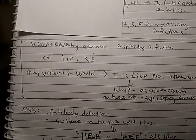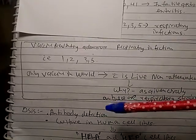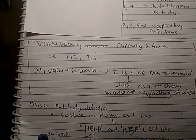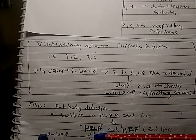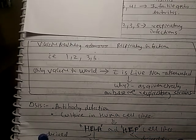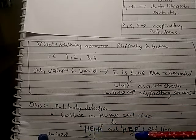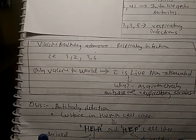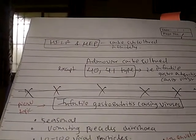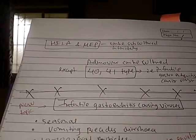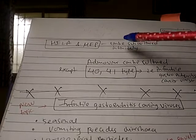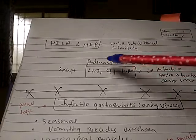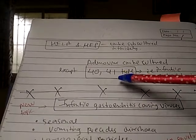Diagnosis of adenovirus involves antibody detection and culture in human cell lines — HeLa and HEP. HEP cell lines are derived from carcinoma of the larynx, and HeLa cell lines are derived from carcinoma of the cervix. HeLa and HEP cell lines can be subcultured infinitely, and all adenoviruses can be cultured through these cell lines except serotypes 40 and 41, which cause gastroenteritis — these cannot be cultured.